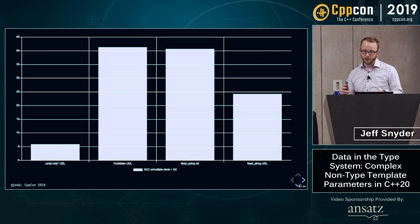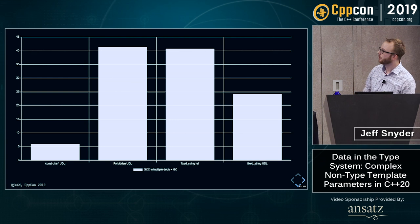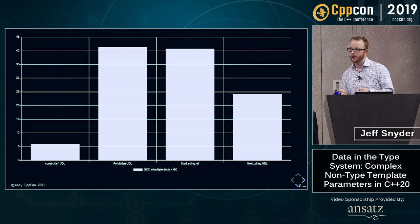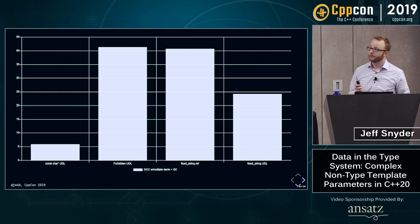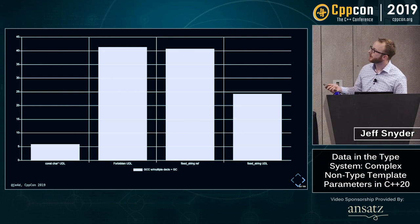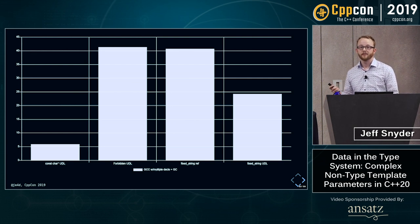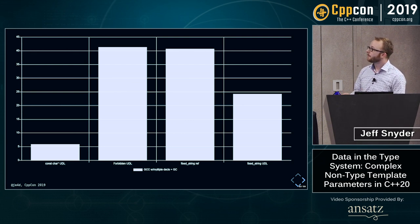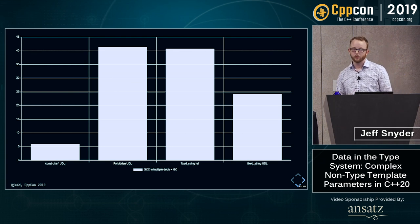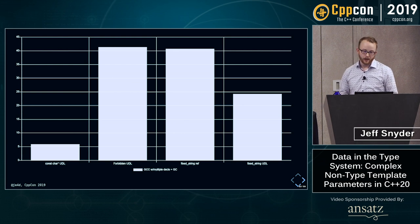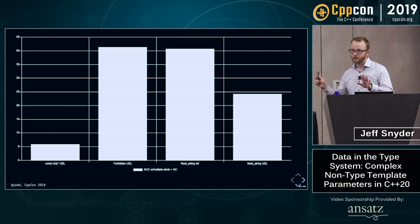Looking at just the GCC version with the fix, we see that the fixed_string UDL is actually better than templating on a fixed_string object — slightly better. I think we can do a fair bit better in the future because there's been no effort to optimize this yet. This is just the simplest implementation GCC could do with no effort to make it good on memory usage. Talking to compiler implementers has given me confidence we can get this down to similar to the original const-char-star UDL.